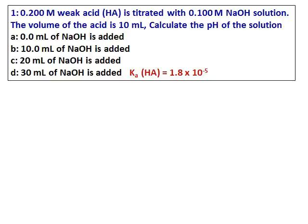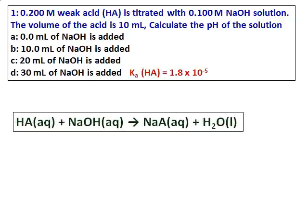The Ka of the acid is given. To start with, let us write the neutralization equation: HA reacting with NaOH giving NaA plus water. We will proceed further and see how each one of these can be calculated.